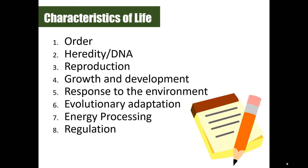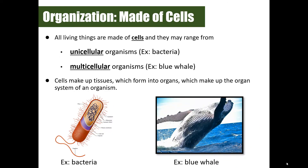Now we're ready to determine what makes an organism living. There are eight different criteria that must be met in order to say an organism is alive. We're going to progress through each of these and I'll give you examples of each of the eight characteristics of life. Let's start with the first one: organization.